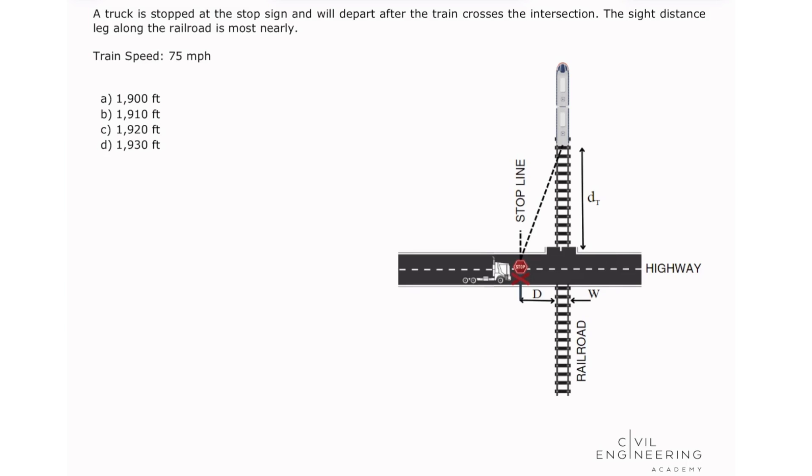Train speed 75 miles per hour. So this problem is asking us the side distance lag along the railroad and this is a grade crossing.